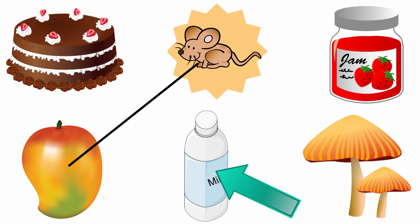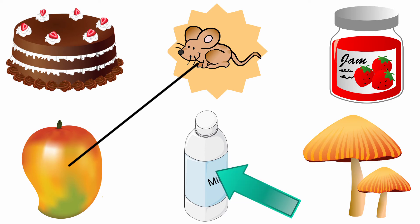The next one, milk. The beginning sound of the picture milk is M. And the sound of the letter M is M. The sound of the letter M and the beginning sound of the picture milk are the same. So, we are going to draw a line from mouse to milk.